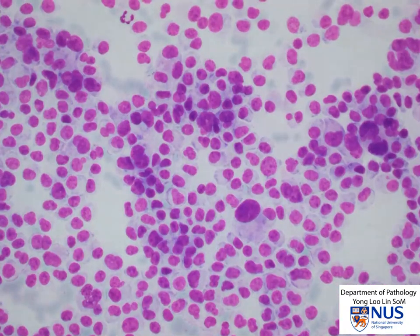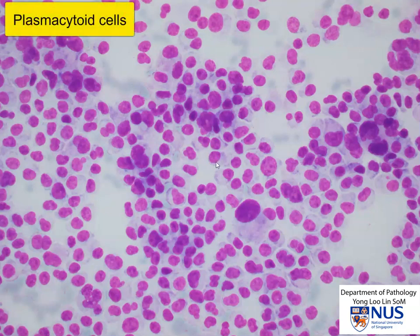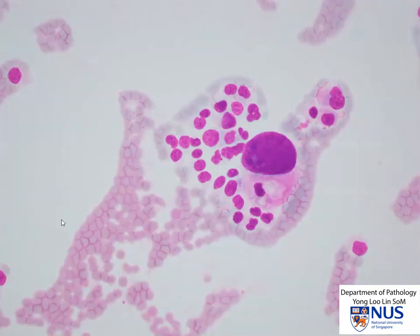At higher magnification, as we focus up and down, we can actually see that the cells are quite plasmacytoid with eccentric rounded nuclei and moderately abundant pale cytoplasm. Here is another example of a very large and bizarre cell.